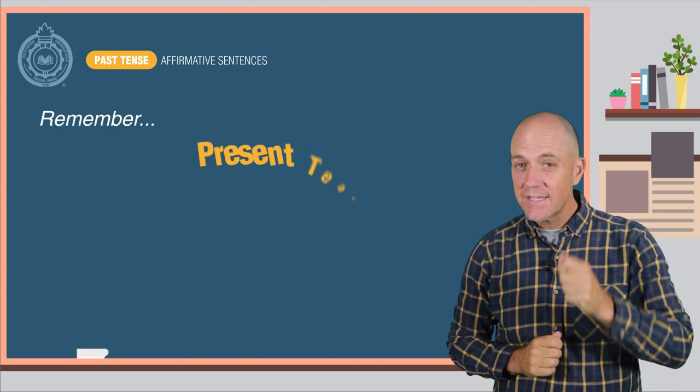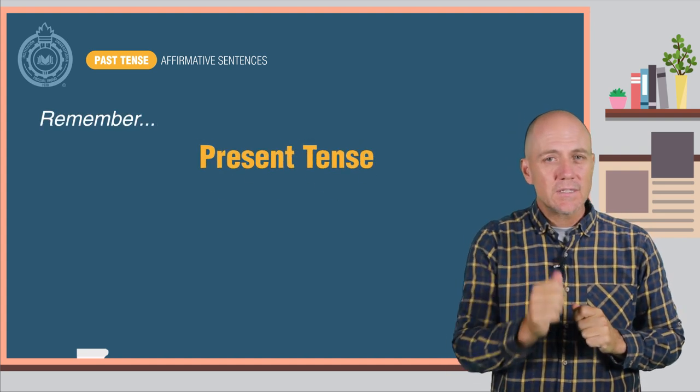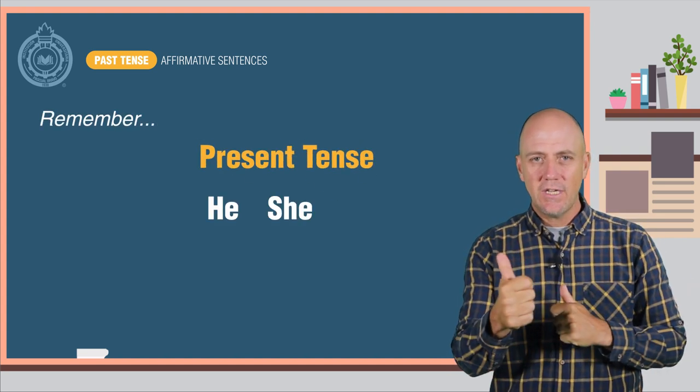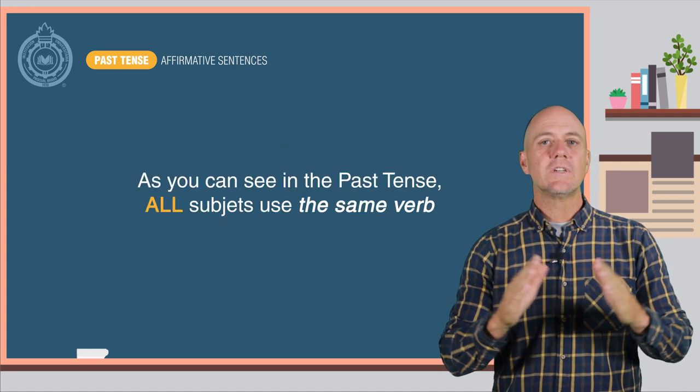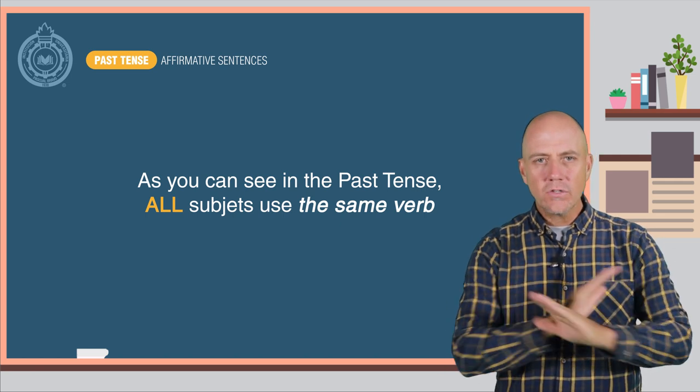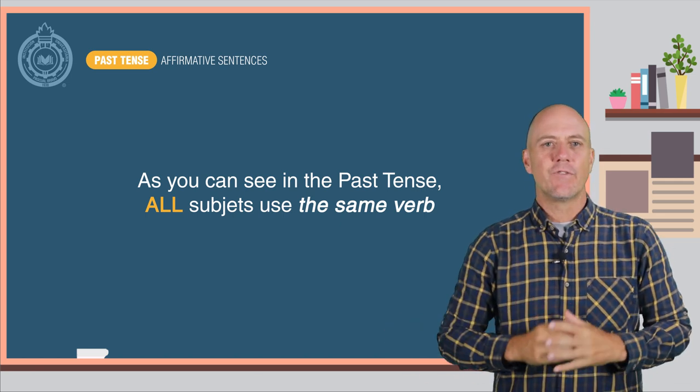Remember in the present tense, if the subject is he, she, or it, you have to add an "-s" to the end of the verb? Well, as you can see in the past tense, all subjects use the same verb.